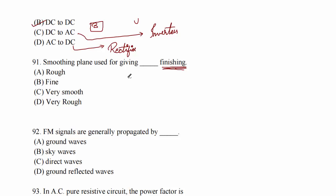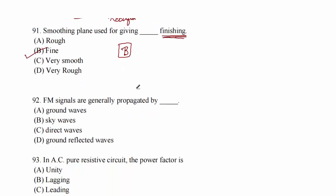Question 91: smoothening plane is used for giving fine finishing. It is for final finishing, like double smooth file. Option B.